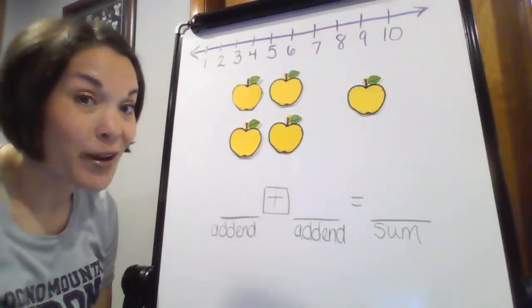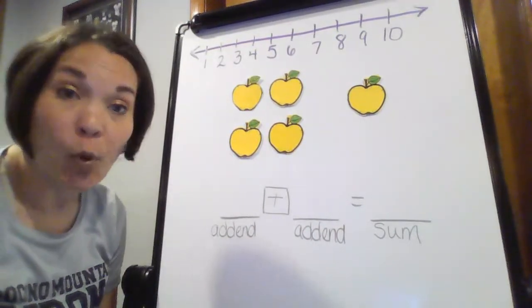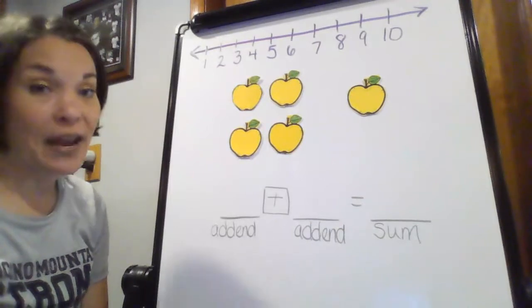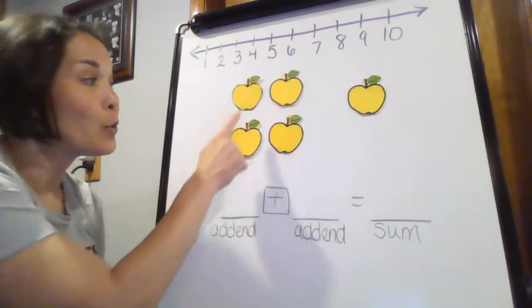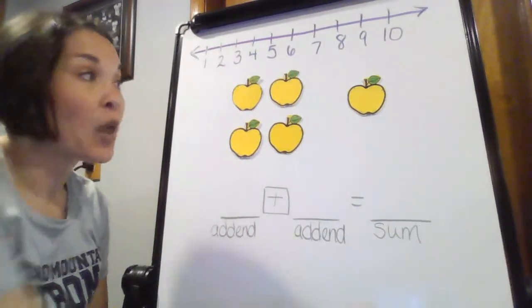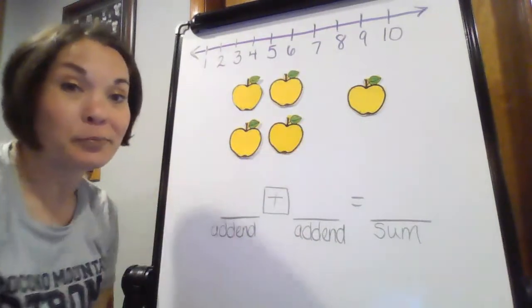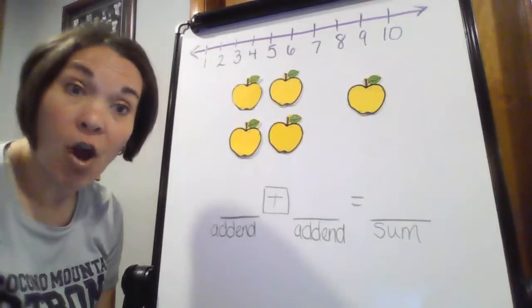So, ready to hear my story? Here we go. Anna went to the apple orchard. She picked four apples. One, two, three, four. Then she picked one more apple. One. How many apples does Anna have in all?